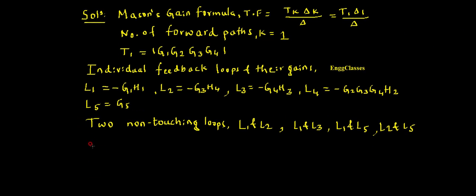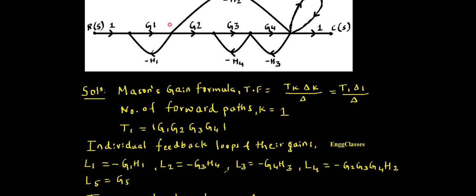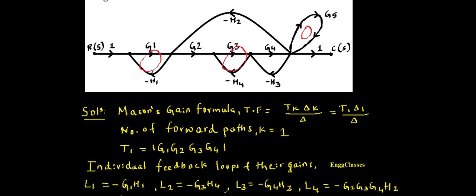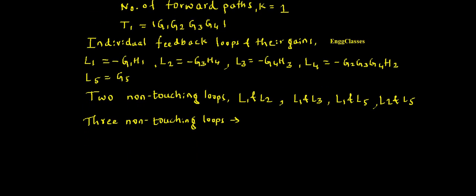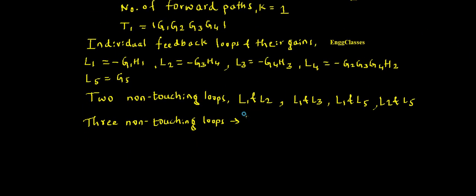Now I need to check for any three non-touching loops. Looking at L1, L2, and L5 — these three are non-touching. So yes, there is one set of three non-touching loops: L1, L2, and L5.